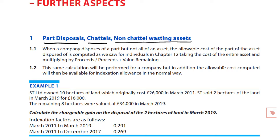With part disposals, we're selling some of an asset we had originally acquired as a complete entity — selling some but not all of it. The usual example, as you'll see in example one, is where you buy land — a quantity of land, whether measured in acres or hectares — and you then sell off some but not all of that land. You know the original total cost, and you now need to establish what proportion of that should be set off against the proceeds on the sale of that particular part.